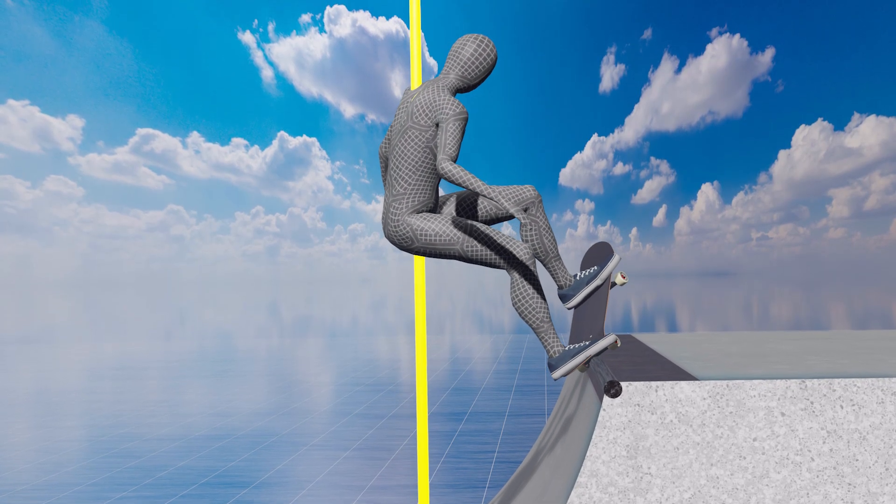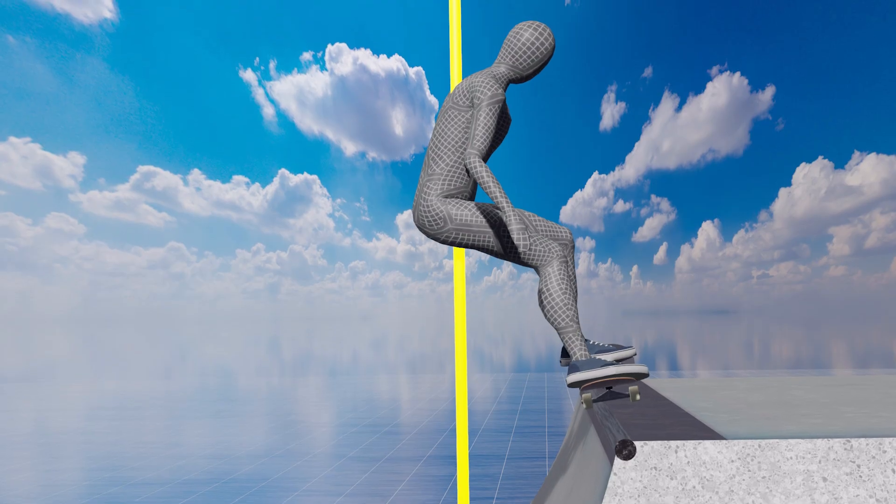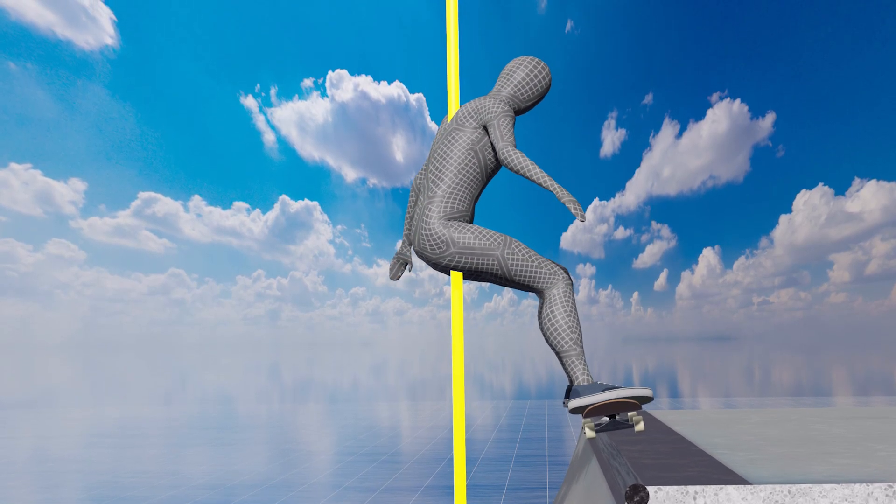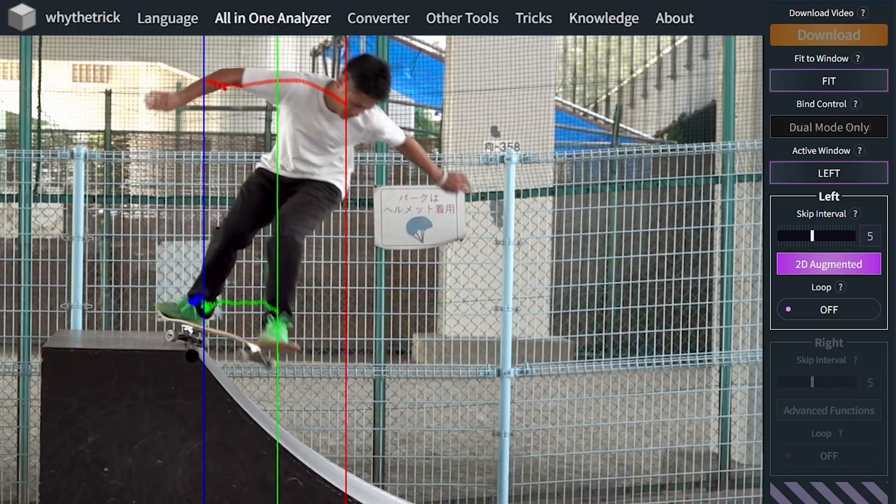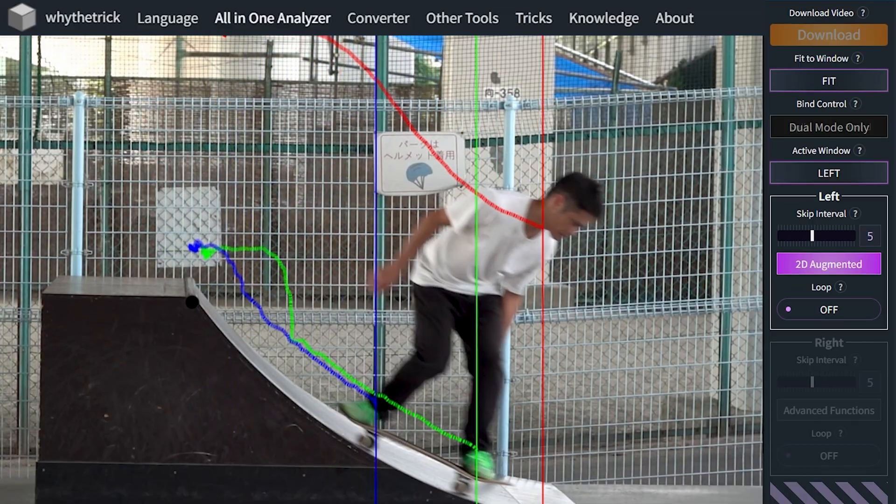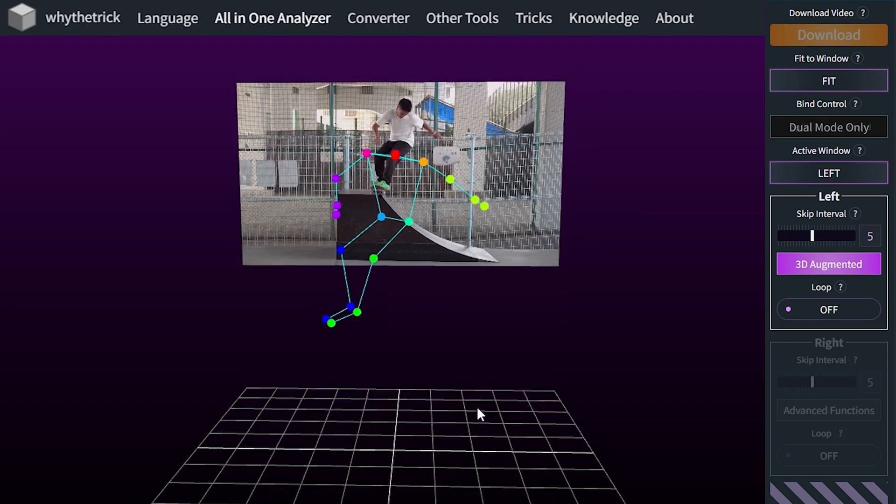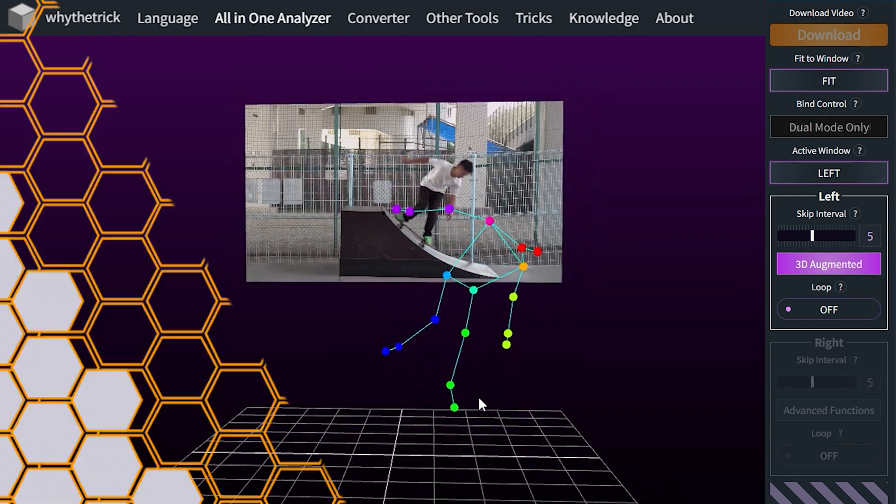While grinding, avoid leaning over the toe-side, and keep your weight on the heel-side the whole time. Also, please try the Why the Trick's motion tracking system. You can visualize the motion of your body parts and simulate it in the 3D environment. Please give me your feedback.